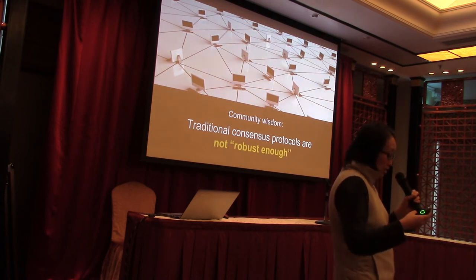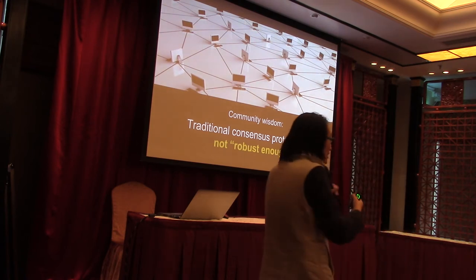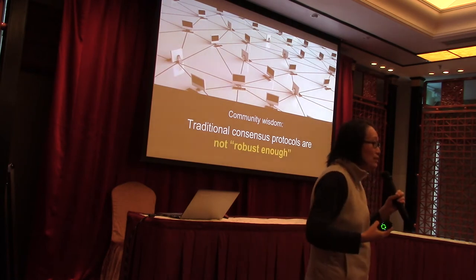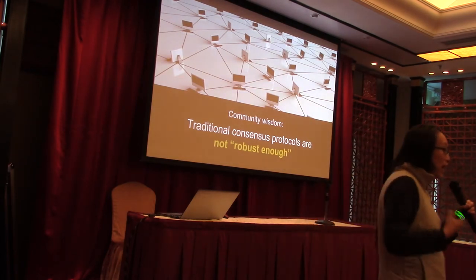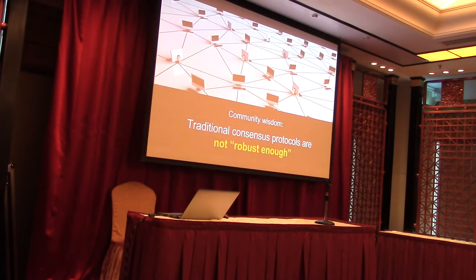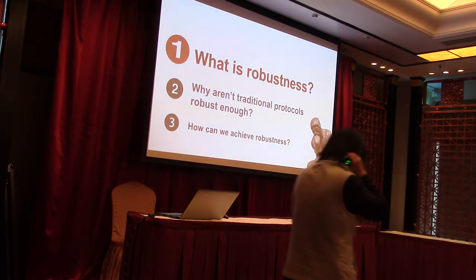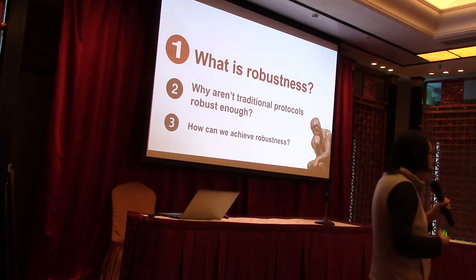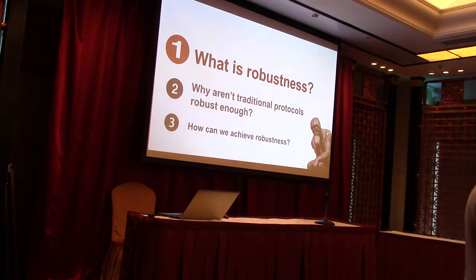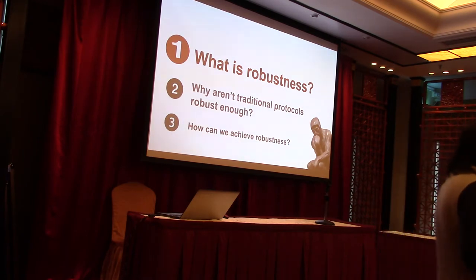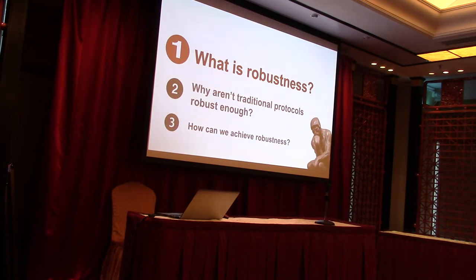When you talk to blockchain and cryptocurrency people, the common wisdom is that classical consensus protocols aren't robust enough for these large-scale deployments, and people want blockchain. But this doesn't answer what kind of robustness properties we actually want. In the rest of the talk, I'll try to answer these questions — first, how do we define robustness; second, why classical protocols fail to achieve this robustness; and finally, how we can achieve it.